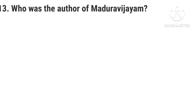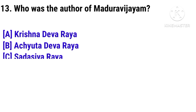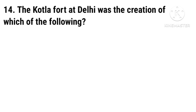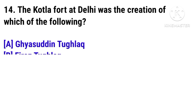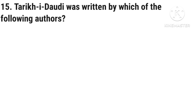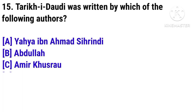Question 13: Who was the author of Madhura Vijayam? Question 14: The Kotla fort at Delhi was the creation of which of the following? Question 15: Tarikh-i-Dodi was written by which of the following authors? The answer is Abdullah.